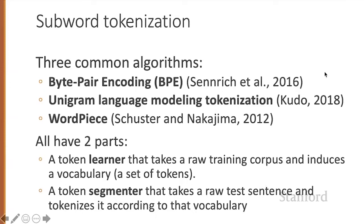There are three common subword tokenization algorithms: byte pair encoding or BPE, which we'll talk about now; an algorithm often called Unigram for Unigram Language Model tokenization; and the word piece algorithm. These algorithms all have two parts. First, a token learner that takes a training corpus and induces a vocabulary — a set of tokens — that the tokenizer will try to map things into. And then the second part is a token segmenter that takes a test sentence and tokenizes it according to the vocabulary it learned from the training corpus. So let's start by talking about the first part, the token learner.